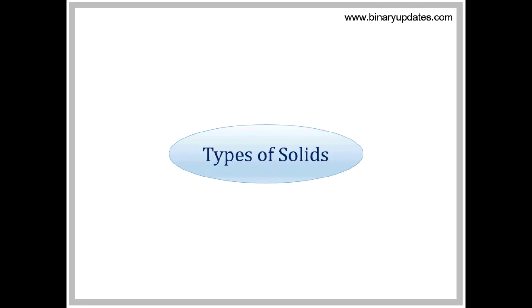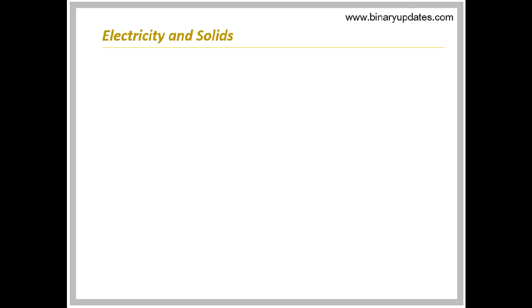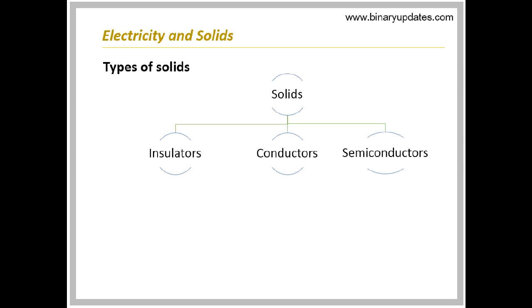Types of solids. According to conductivity, the solids can be divided into three categories, namely insulators, conductors, and semiconductors.